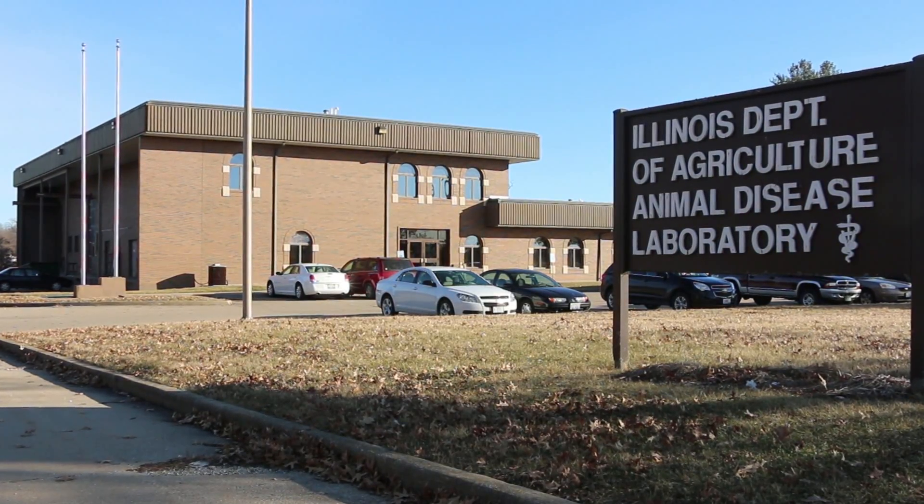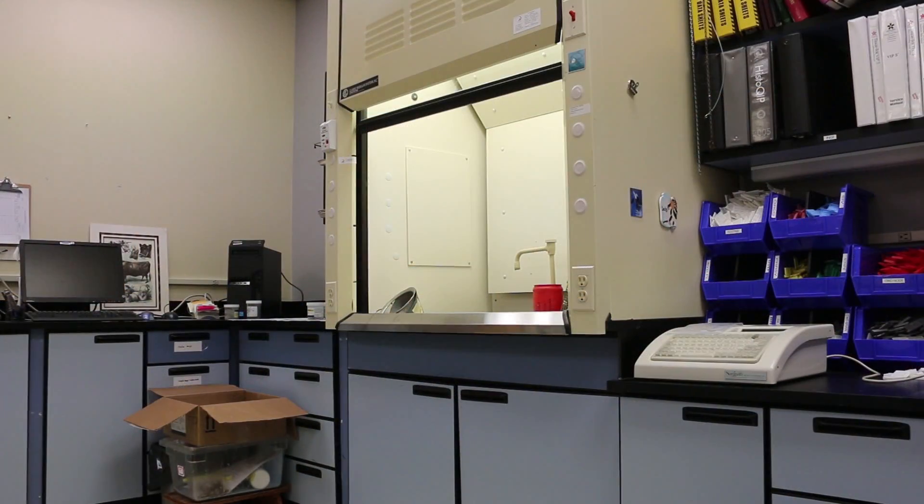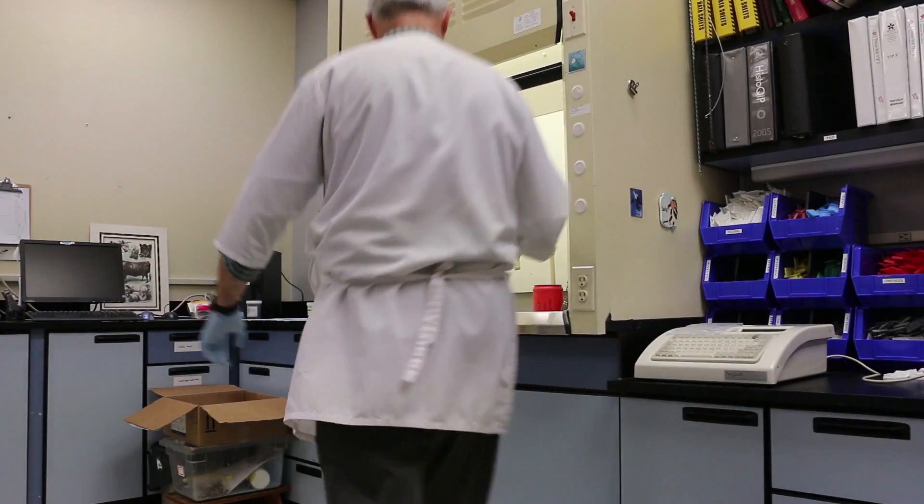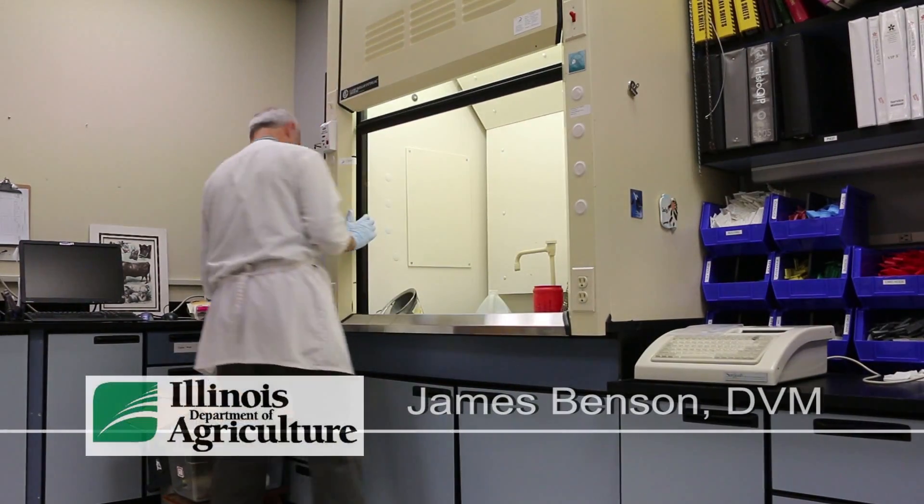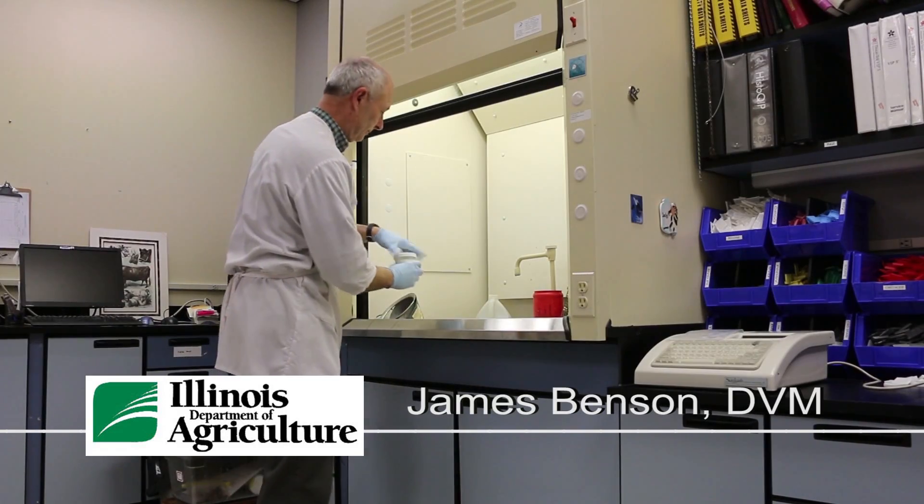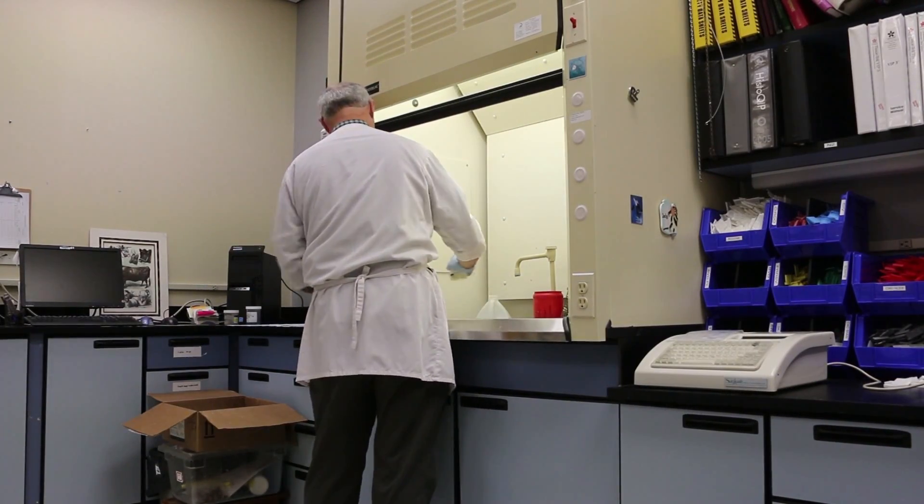To track occurrences of chronic wasting disease, biologists need good science to go on. Let's go behind the scenes at the Illinois Department of Agriculture's Animal Disease Laboratory in Galesburg to see how scientists test the samples provided by hunters.